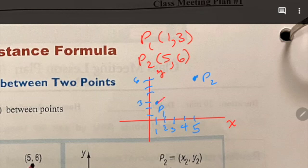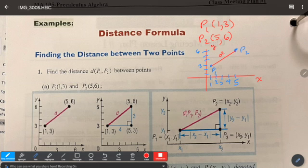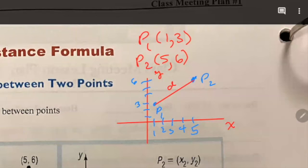Alright, so we're trying to find this distance right here. Now to do that, there's a few ways we can do it. The first way is we can create this right triangle. The reason why we would want to create a right triangle is because right triangles have this wonderful theorem.